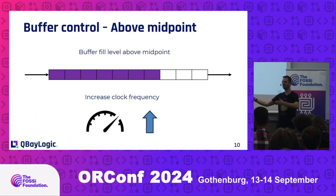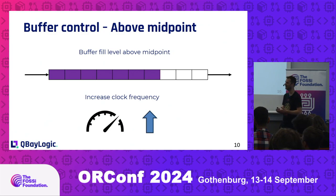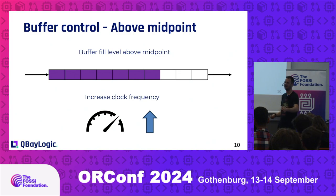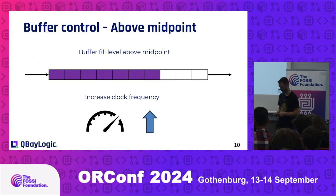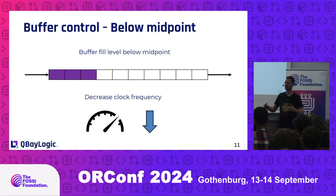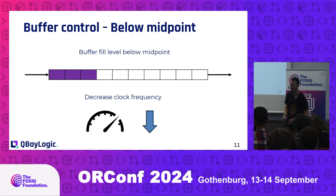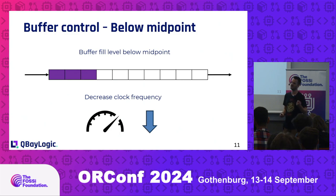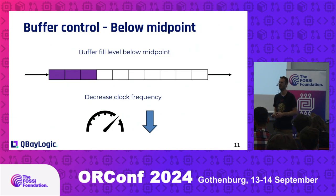If the FIFO goes beyond the midpoint — because we try to keep the data at the midpoint — if it goes above the midpoint, that means our neighbor is producing slightly faster than we are consuming. So we have to raise our own clock frequency so that it will go back to the midpoint. If the FIFO goes below the midpoint, that means we are consuming faster than our neighbors are producing, and as a result we have to lower our frequency so that the buffer fills up again to the midpoint.